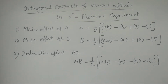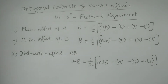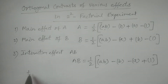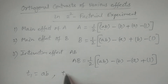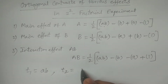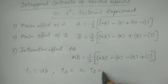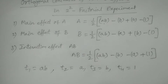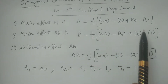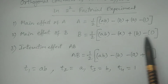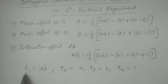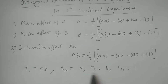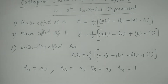Now we identify the treatments. Consider T1 = AB, T2 = A, T3 = B, T4 = 1. These are the four treatment combinations. I have labeled them in this order: AB as T1, A as T2, B as T3, and 1 as T4.